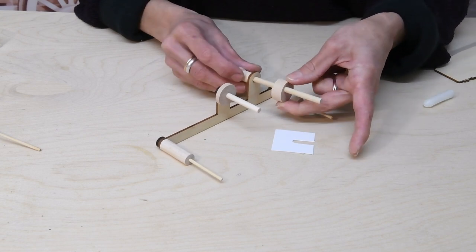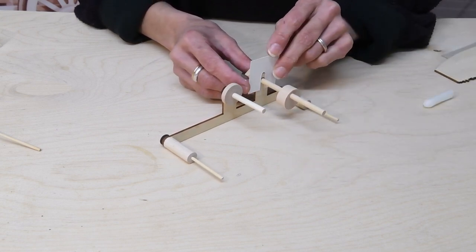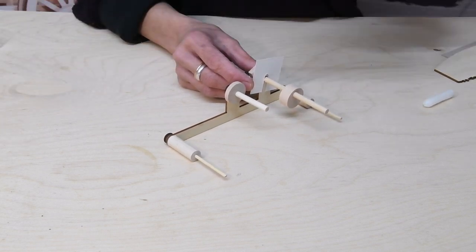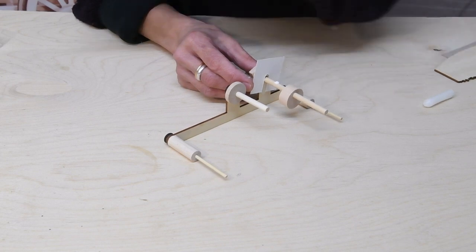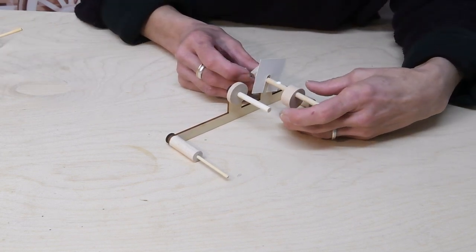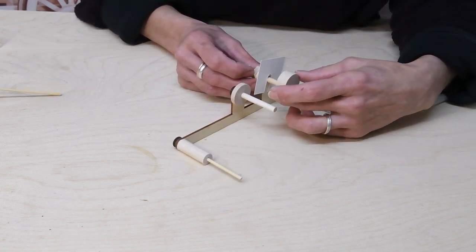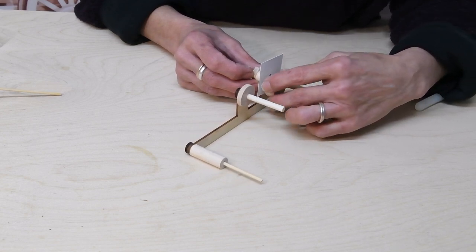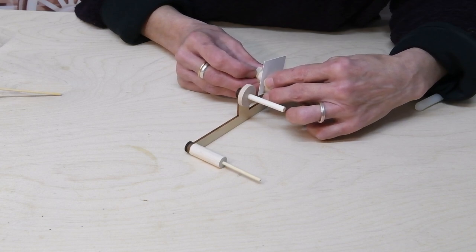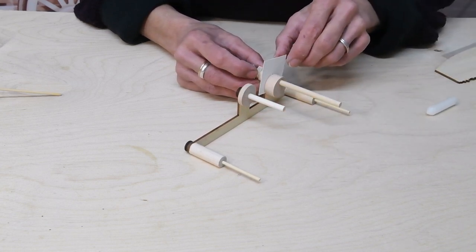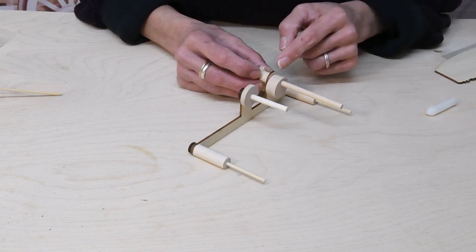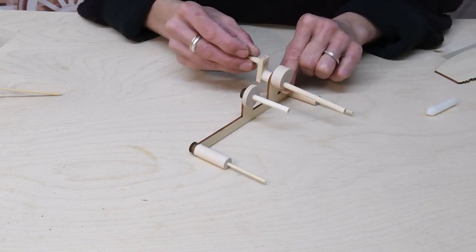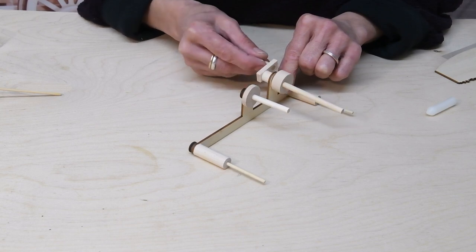Before we glue the cam in position, we're going to put a glue guard between the cam and part number four. This stops the glue getting onto part number four to make sure that the crank handle will always turn freely. So as we turn the cam around as it goes up, the dowel makes sure the glue goes all the way around. When we take the glue guard away, there's a little tiny gap between the cam and part number four to make sure that will always turn freely.